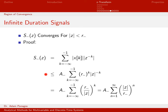From the second line to the third, the inequalities haven't changed — just some algebra. R minus to the K times the magnitude of Z to the minus K can be rewritten as R minus to the K times 1 over the magnitude of Z to the K, which simplifies to R minus over the magnitude of Z, all raised to the K.